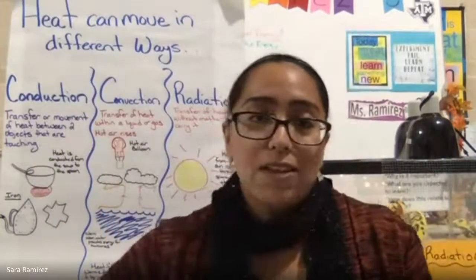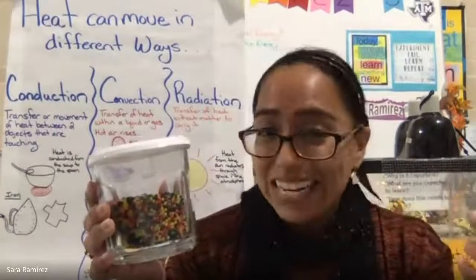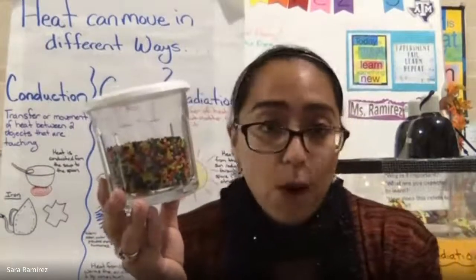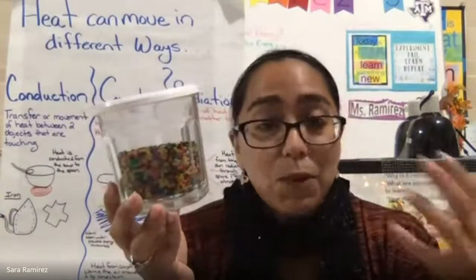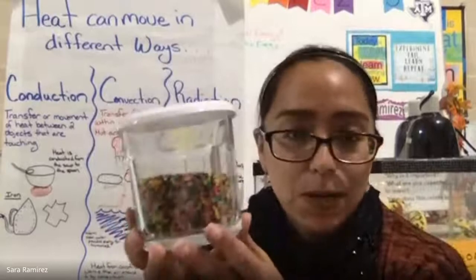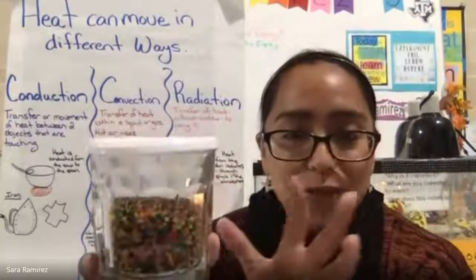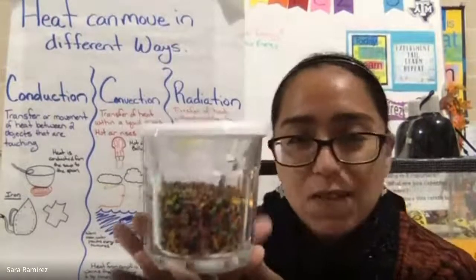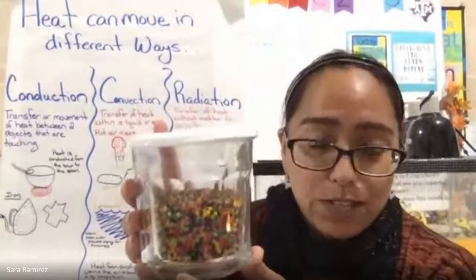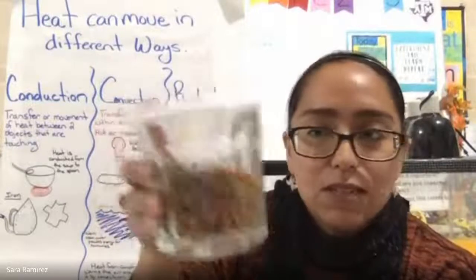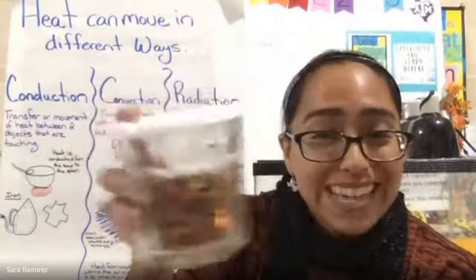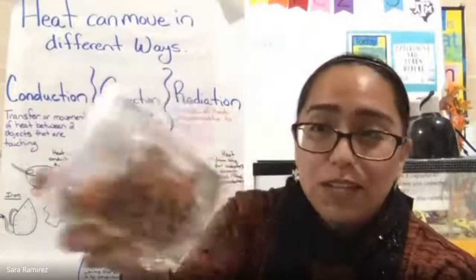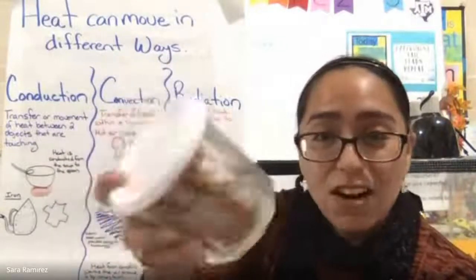All matter is made out of particles. Let's look at this jar of particles to compare thermal energies. When I barely shake the glass, the particles are barely moving — very little kinetic energy and very little thermal energy. When I shake it a bit more, the particles move more, so we have more kinetic and thermal energy. When I shake it really fast, the particles move a lot faster — more kinetic energy and more thermal energy.